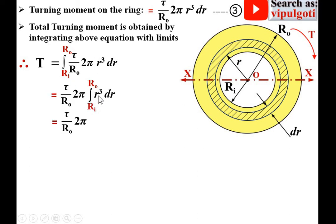The integration of r³ is r⁴/4 with limits RI to RO. So τ/(4Ro)·2π·[r⁴] from RI to RO, which simplifies to τ/(2Ro)·π·[Ro⁴ - RI⁴]. This is equation number 4.